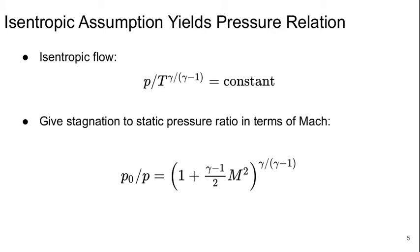We'll also assume that our flows are isentropic. If we do this, we can get a relationship between the temperature and pressure. For an isentropic flow of a perfect gas, P over T to the gamma over gamma minus 1 is a constant. This allows us to write a stagnation to static pressure ratio expression in terms of purely the Mach number: P naught over P equals 1 plus (gamma minus 1) over 2 times M squared, all to the power of gamma over gamma minus 1. These are familiar expressions that we used when we were dealing with rocket propulsion and also back in aero fundamentals.